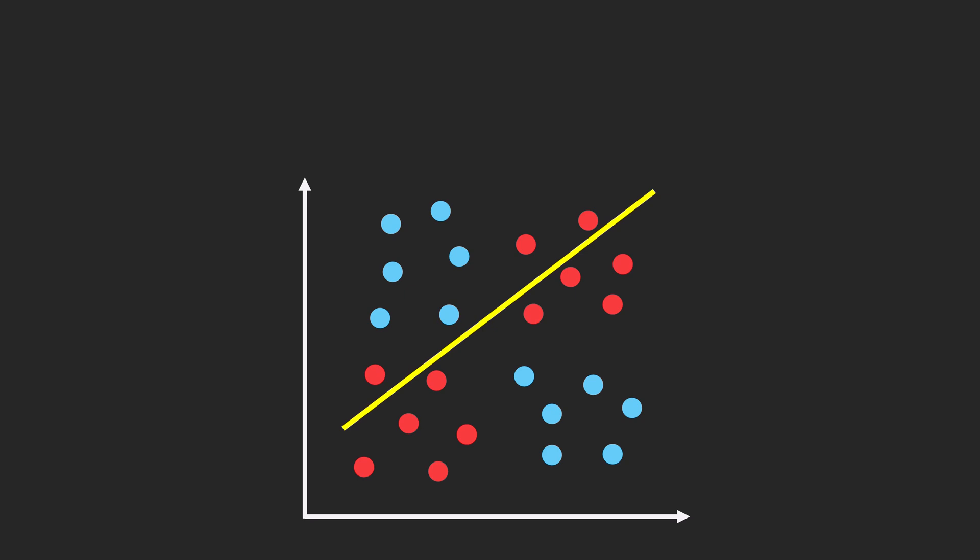Before we answer this, let's simplify the problem first. In a simple one-dimensional scenario, classification is straightforward. A single threshold separates two classes. All points on one side of the threshold belong to the blue class, and all points on the other side belong to the red class.